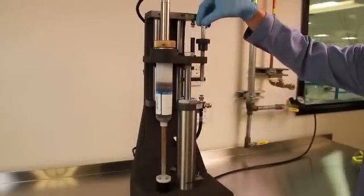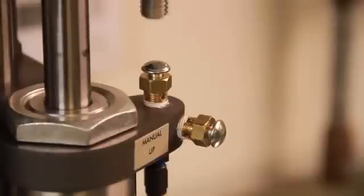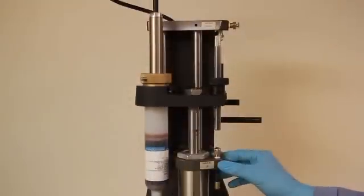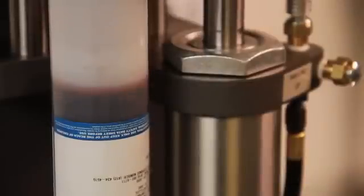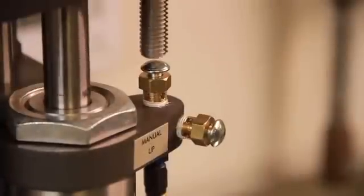Fine tune downstroke screws so that the dasher just makes contact with the plunger. Hold manual up poppet valve for a few seconds to confirm the fine tuning adjustment has positioned the dasher so that it just makes contact with the plunger.